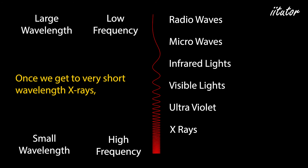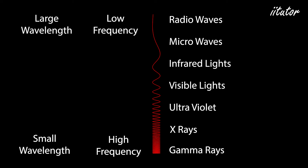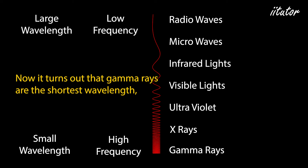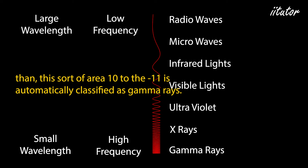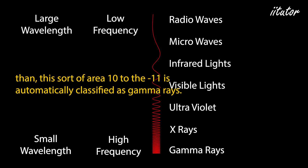Once we get to very short wavelength x-rays, we start calling them gamma rays. Gamma rays are the shortest wavelength electromagnetic waves possible. Anything with a wavelength shorter than around 10⁻¹¹ meters is automatically classified as a gamma wave.